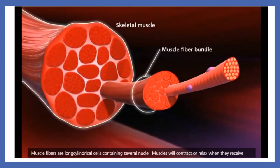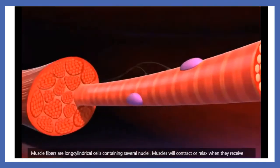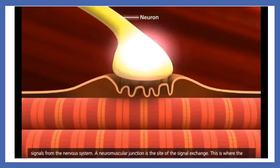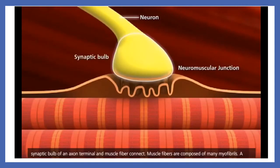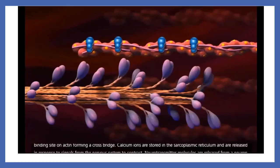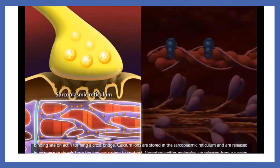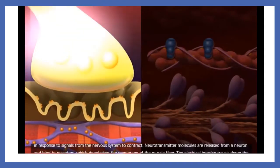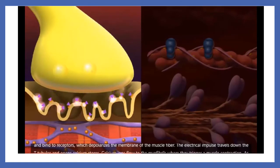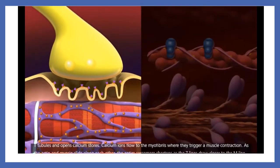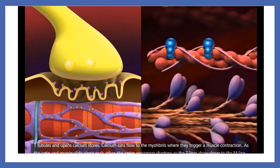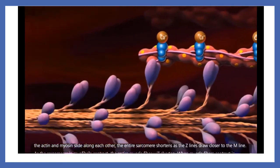Skeletal muscles are composed of bundles of muscle fibers. Muscle fibers are long cylindrical cells containing several nuclei. Muscles will contract or relax when they receive signals from the nervous system. A neuromuscular junction is the site of the signal exchange — this is where the synaptic bulb of an axon terminal and muscle fiber connect. Calcium ions are stored in the sarcoplasmic reticulum and are released in response to signals from the nervous system to contract. Neurotransmitter molecules are released from a neuron and bind to receptors, which depolarizes the membrane of the muscle fiber. The electrical impulse travels down the T-tubules and opens calcium stores, and calcium ions flow to the myofibrils where they trigger a muscle contraction.